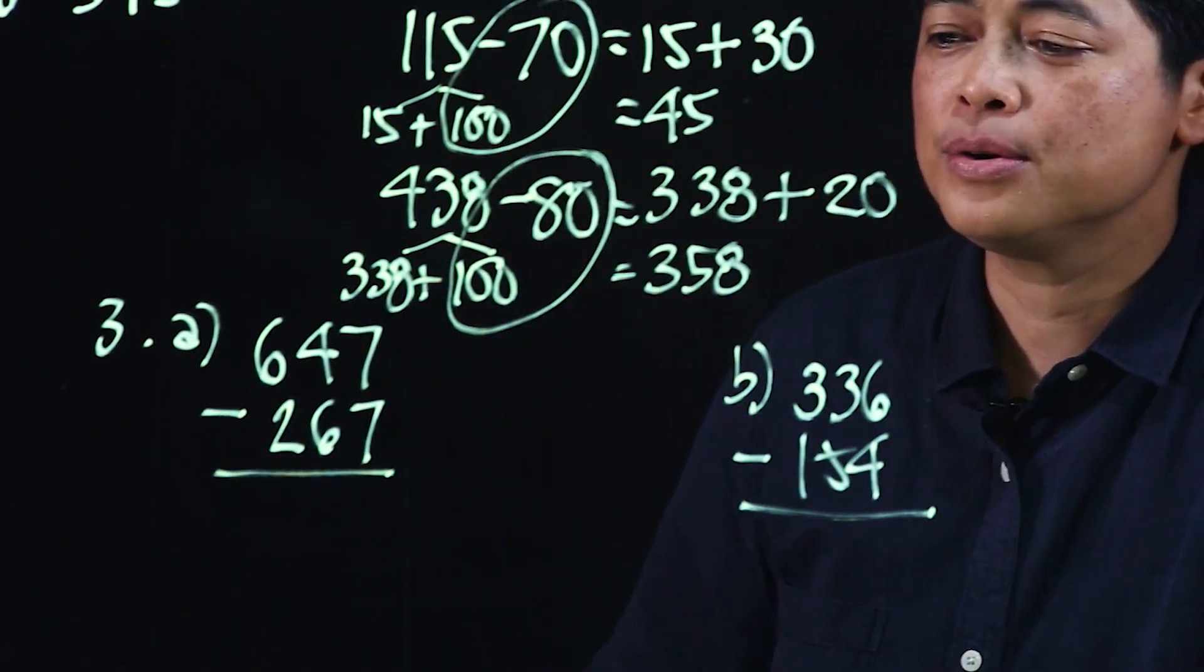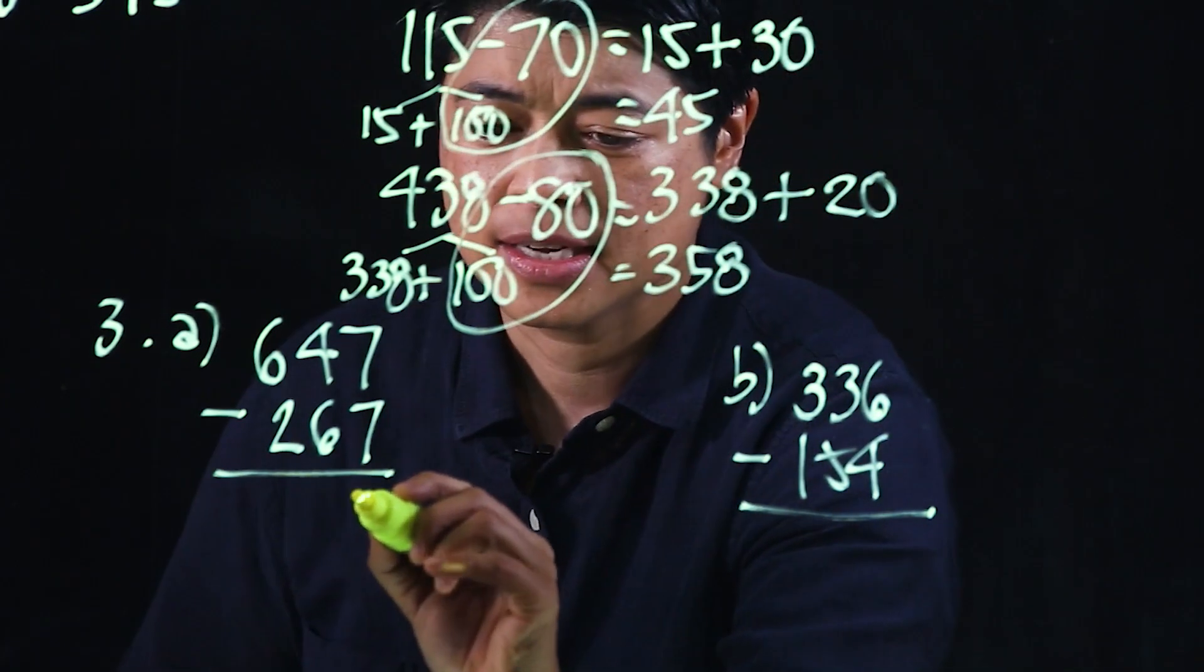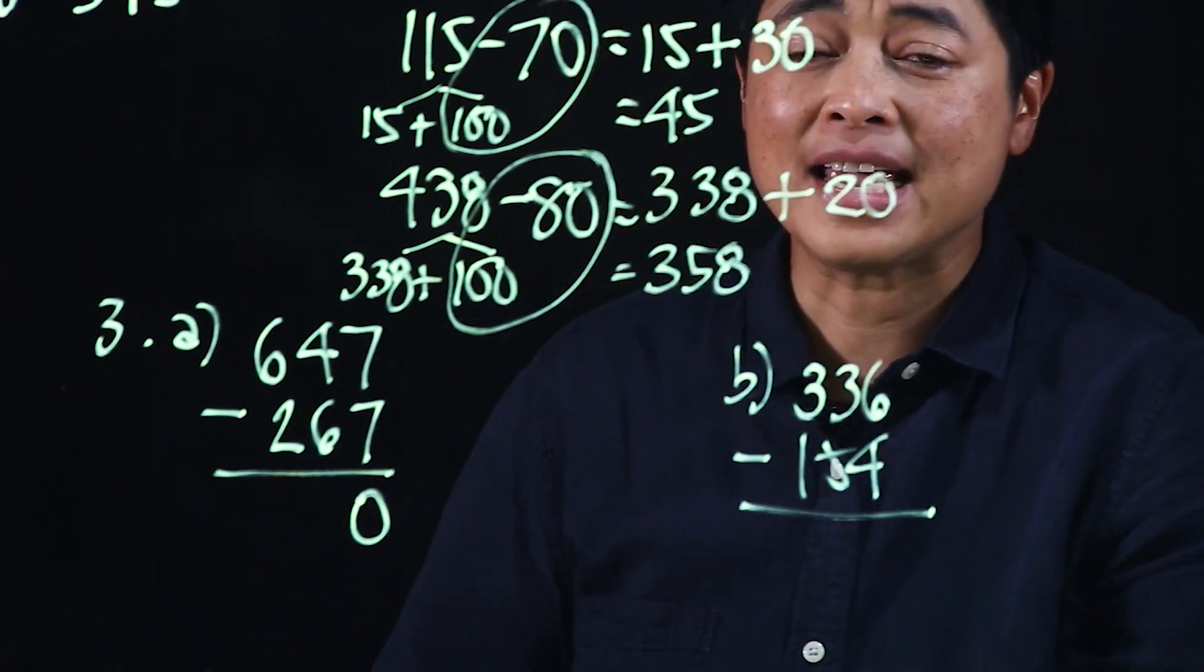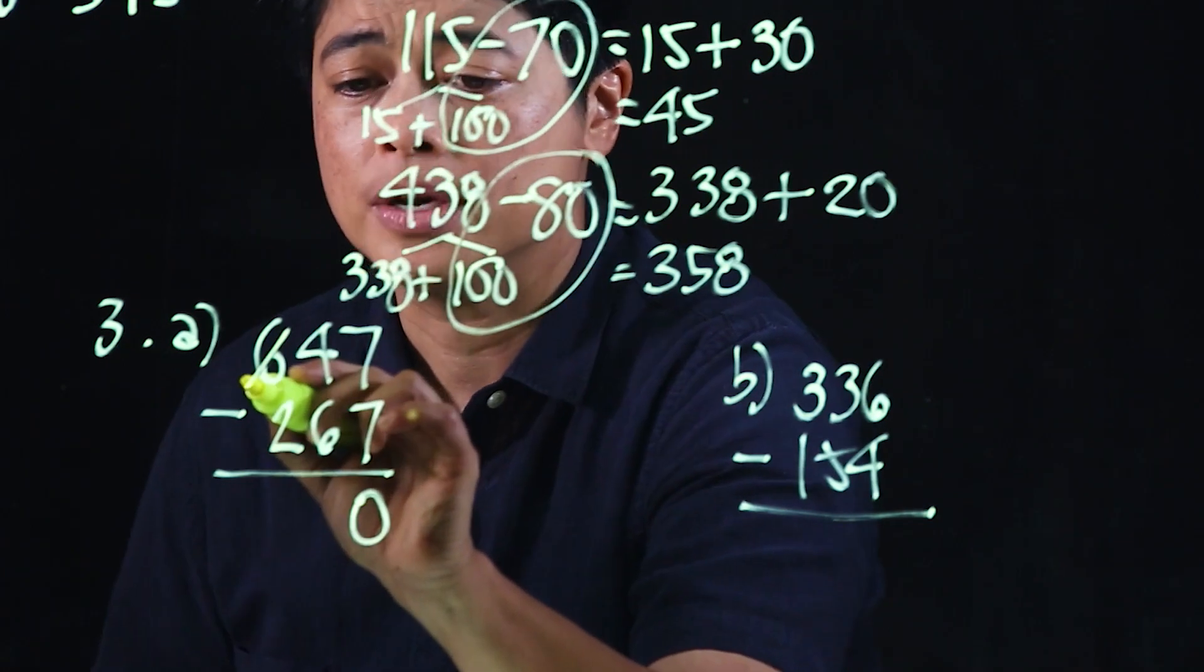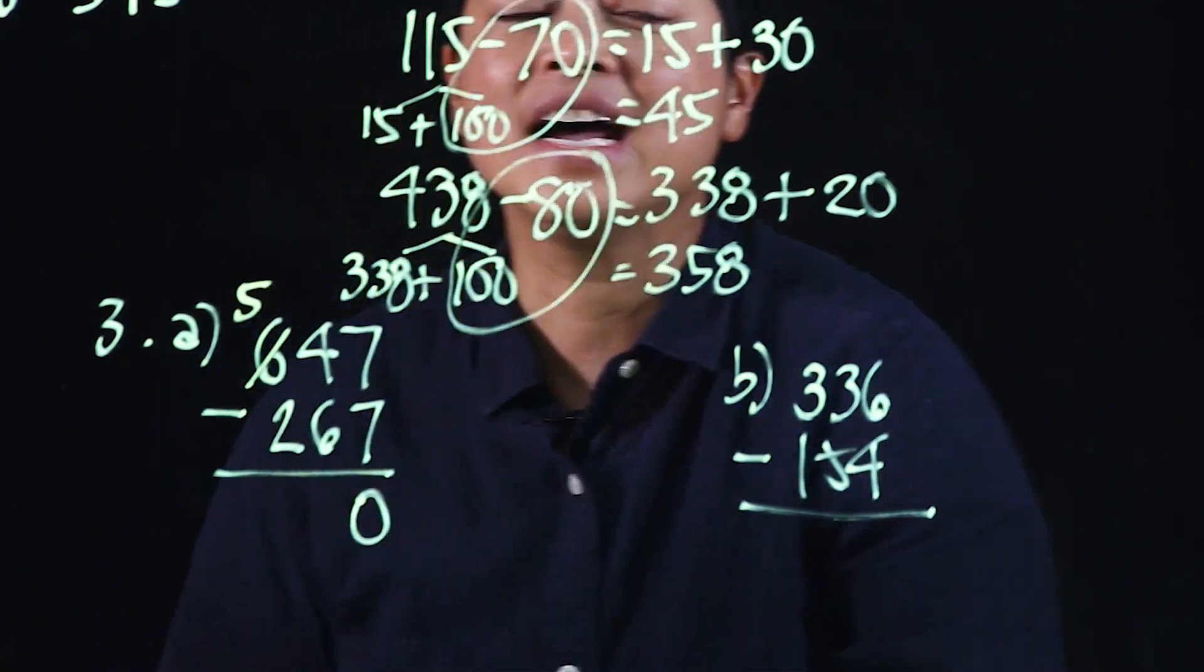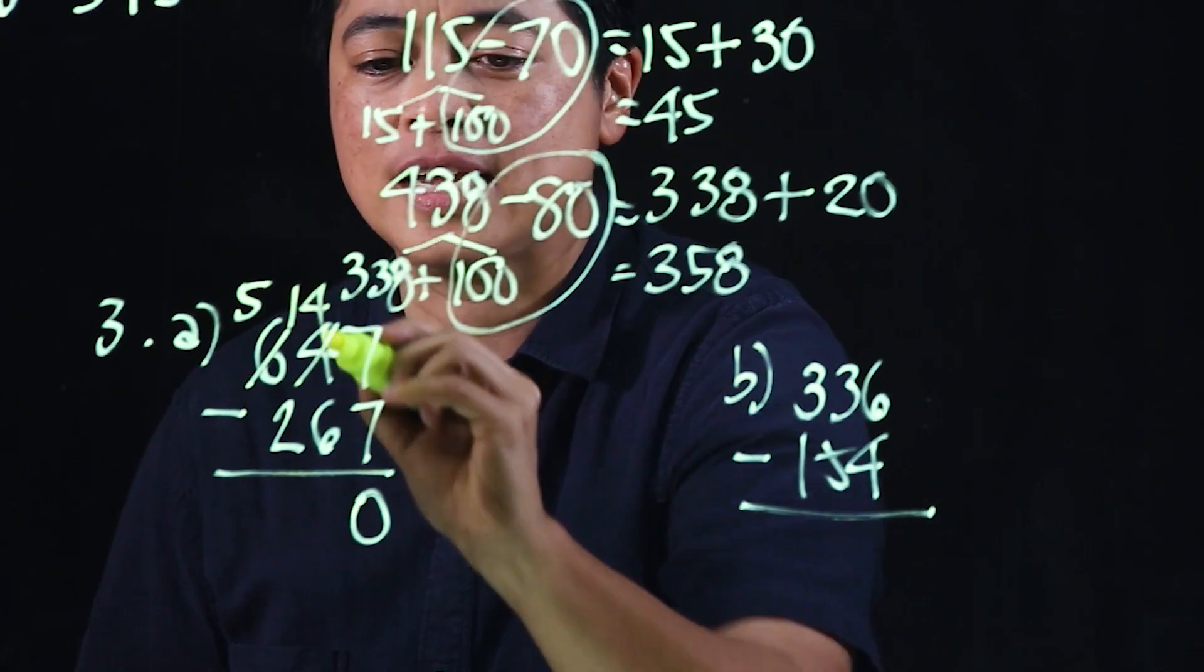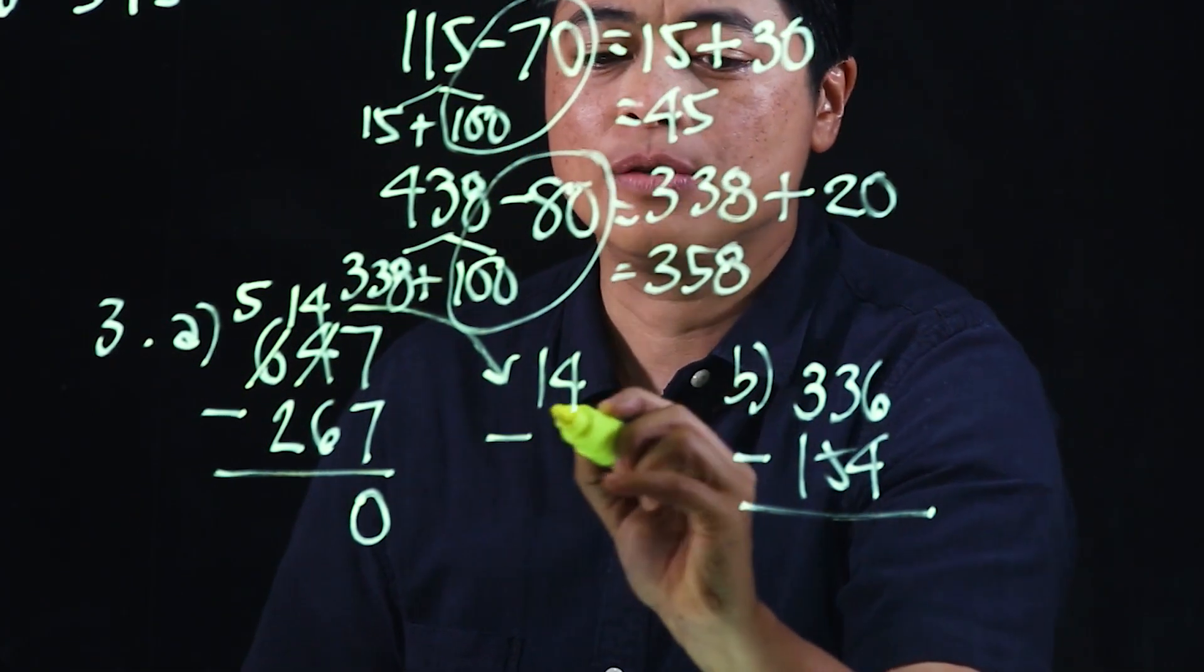What we need to do is subtract 7 minus 7, which is 0. Now we need to take away 6 from 4. Clearly cannot. So if we cannot, we need to borrow. That would make it 5 and regroup, which makes it 14.